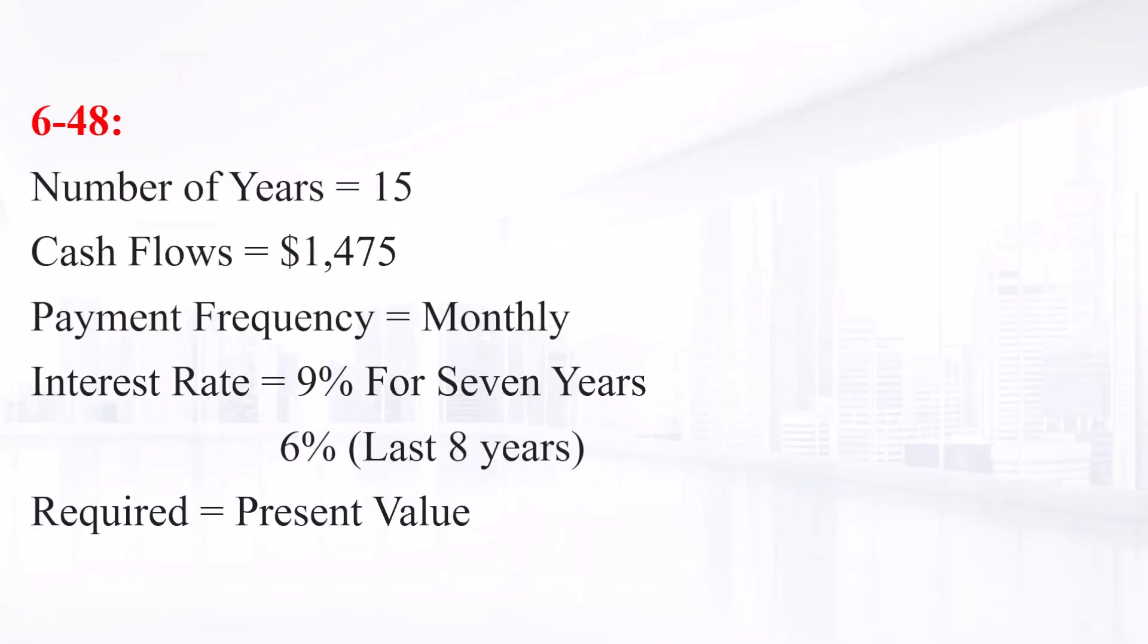We need to find the present value of the cash flows for the last eight years first. The cash flow is $1,475, N is 8 years or 96 months, interest rate is 6%, and monthly compounding is used.